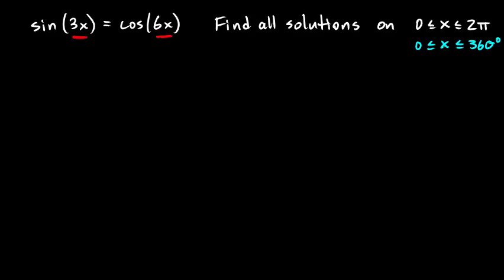First of all, I look at this 3x and this 6x, and I realize that's kind of an unnecessary complication that I can make easier if I do a little substitution. I'm going to say let u equal 3x. So this is u, and over here, this is 2u. So now the problem can be rewritten like this: sine of u equals cosine of 2u. That's a little bit simpler. When we get to the end, we'll get some answers for u, and we can substitute this back in for u.